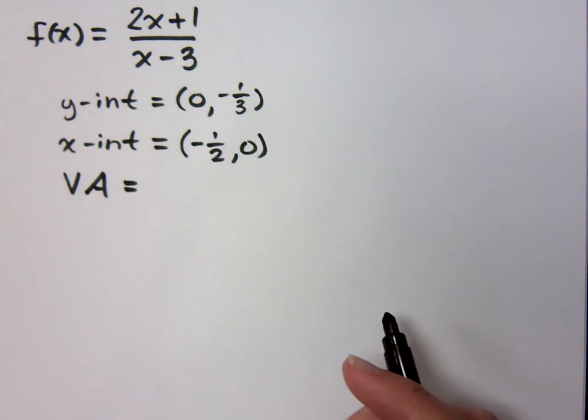Your vertical asymptote. Your vertical asymptote comes from what makes the denominator equal to zero.